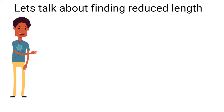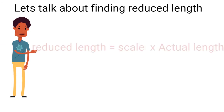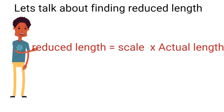Now let's talk about finding reduced length. The reduced length is equal to scale times the actual length. To find the reduced length, you simply multiply your scale by the actual length. Let's look at an example to be able to solve questions on reduced length.